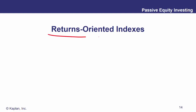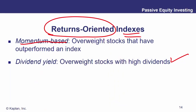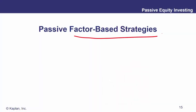We can also focus on a returns-oriented index. Maybe I want to overweight stocks through momentum — if you've outperformed the index, I want to overweight you in my portfolio. A lot of people love dividend yield; we can overweight stocks with high dividends. We can also overweight based on a fundamental we want to focus on — maybe dividends, sales, or income. So we've covered a lot of information on benchmarking: what makes a reasonable benchmark, how to design it, how to reconstitute and rebalance.